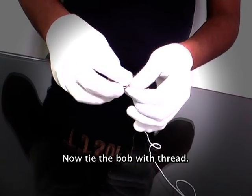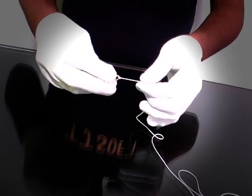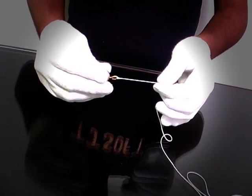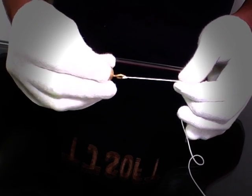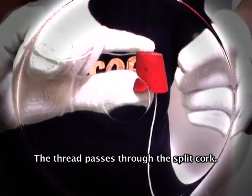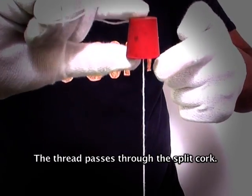Now tie the bob with thread. The thread passes through the split cork.